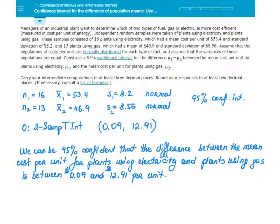Independent random samples were taken of plants using electricity and plants using gas. These samples consisted of 16 plants using electricity, which had a mean cost per unit of $53.4 and standard deviation of $8.2, and 13 plants using gas, which had a mean of $46.9 and standard deviation of $8.56.